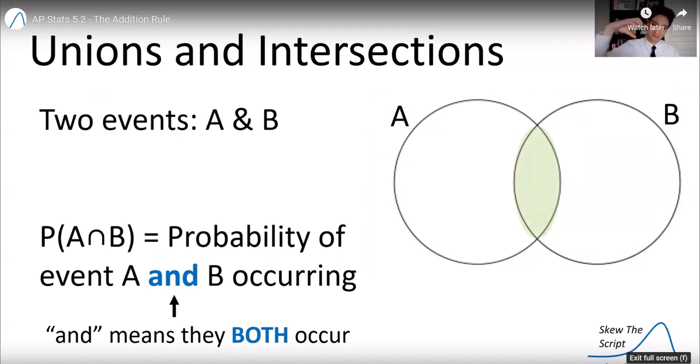So this is a new symbol here. The upside down U is AND. That's the probability that event A and B occur. And there's a very specific definition for AND in probability. AND means both. AND means they both occur. And this is called the intersection of events A and B. You'll notice on the Venn diagram, it is where the two intersect, where they both occur.